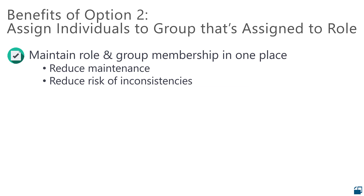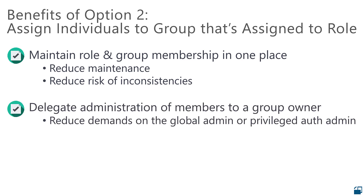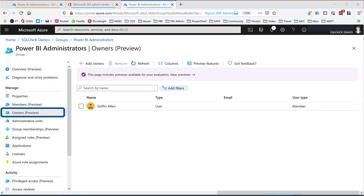The biggest benefit to this approach is that we've aligned the role and the group, which reduces maintenance and risk of inconsistencies. Secondly, it allows us to delegate management of who is a member of the Power BI administrator role. Let's say Power BI administration is handled by a BI team or a center of excellence which is not part of central IT. Since we can assign a group owner — for instance, someone from the BI or COE team — we can now effectively delegate administration of the role to them. This takes the load off your global administrator or your privileged authentication administrator. Back in Azure AD, on the owners page, I can see that I've assigned Griffin as the owner of the group, so management of the group and the role membership is delegated to him.